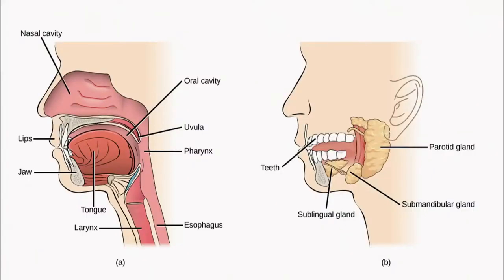This diagram shows the positioning of the various glands: the yellow-colored parotid gland beneath the ear, the sublingual gland beneath the tongue, and the sub-maxillary gland near the jaw.